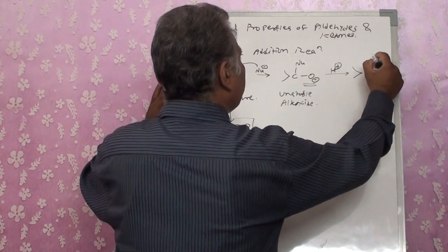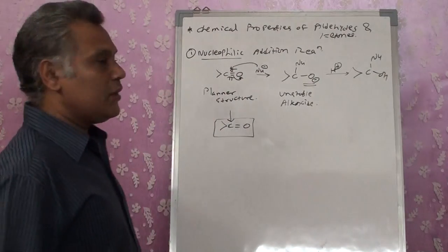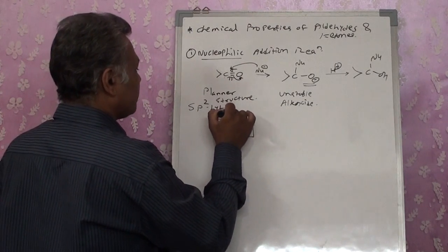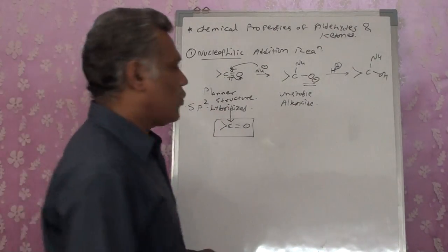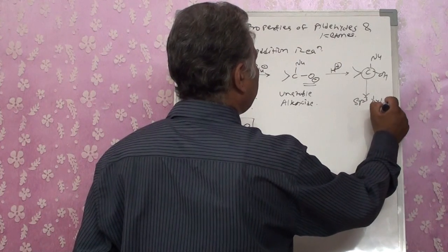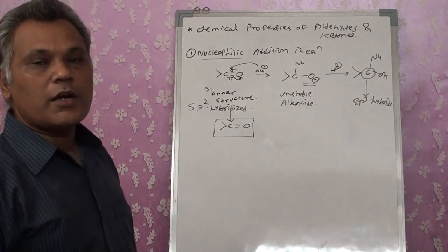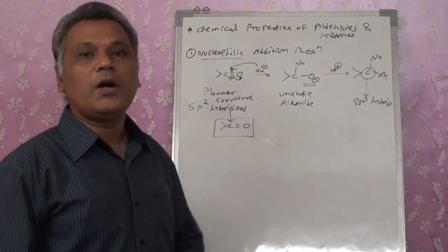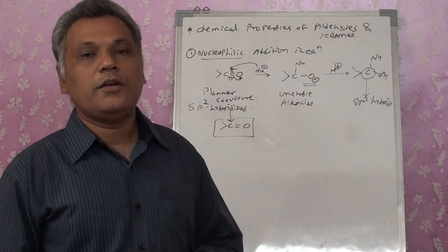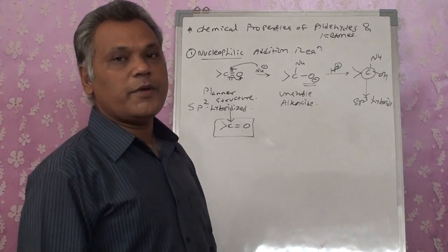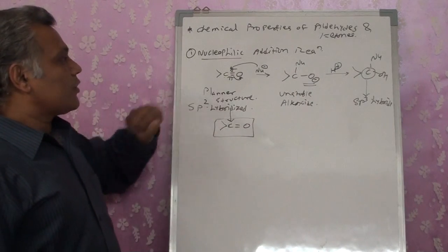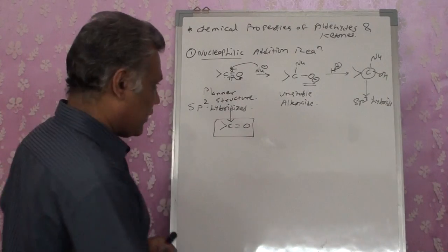The alkoxide reacts with H plus and gets converted into an OH group. The carbon, which was initially sp2 hybridized in the compound, becomes sp3 hybridized. That means the compound which was initially planar gets converted into a tetrahedral structure. A nucleophile and hydrogen are both added into the compound, and such reactions are termed nucleophilic addition reactions. This was the mechanism of nucleophilic addition reaction.